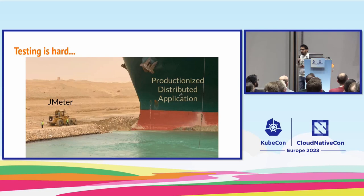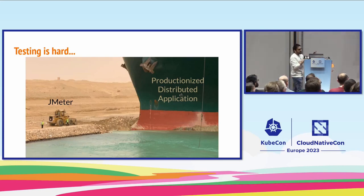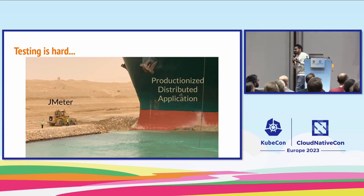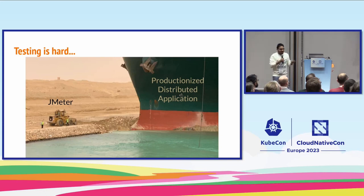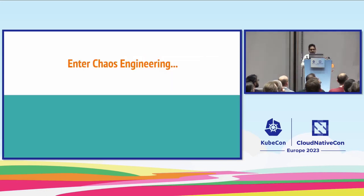Testing is hard. You have a productionized distributed application and you're trying to test it with something like JMeter — it's hard. We need some other mechanism, and that's where we enter chaos engineering.